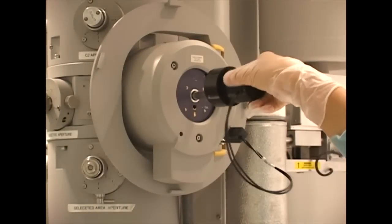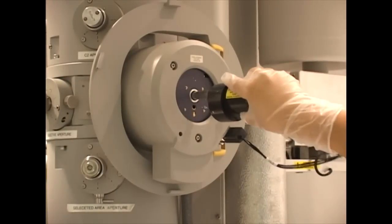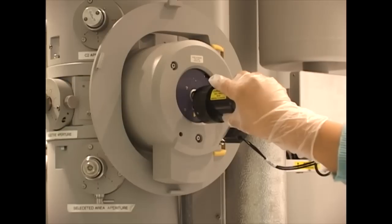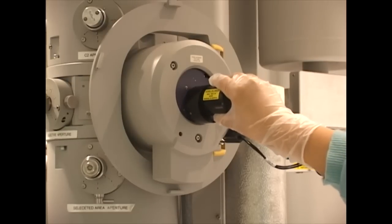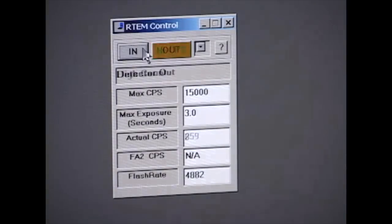With the system pumped down and the light off, turn the holder counterclockwise and let the vacuum gently pull the holder in. Click In, and the EDX detector moves in.